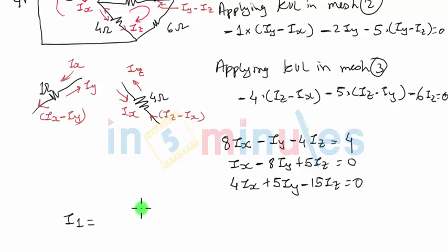your final answers will be the same. IX is 0.66 amperes, IY is 0.24 amperes, and IZ will be equal to 0.26 amperes.